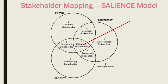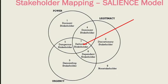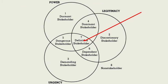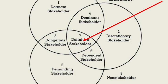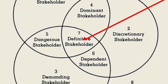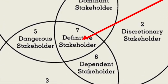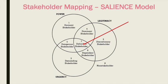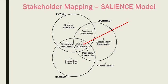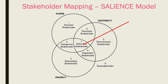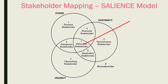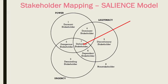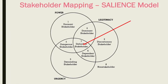Now I can determine whether my actors are powerful, legitimate, or have urgency. If they have all three characteristics, they are my definitive stakeholders — those at the center of the diagram, in area 7. Not caring for their needs will critically endanger my operations. I can also identify those in area 5, who have power and urgency. I need to monitor those actors because they are urgent and have power, although they are probably not legitimate.